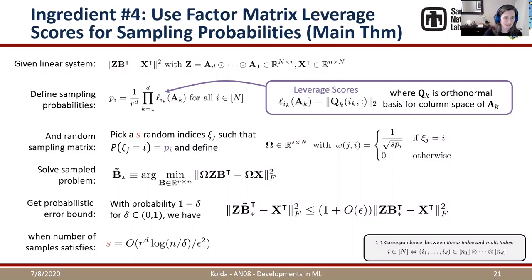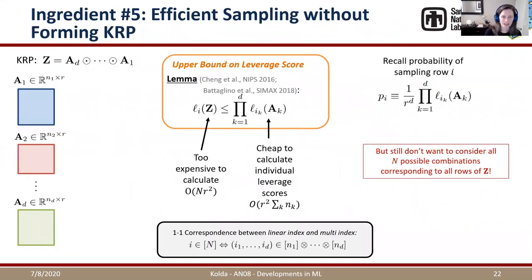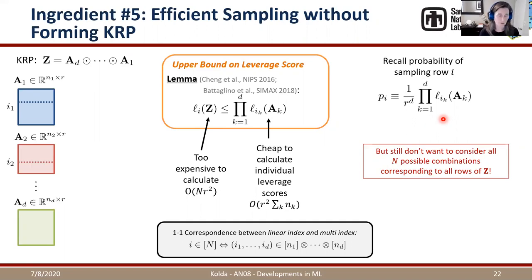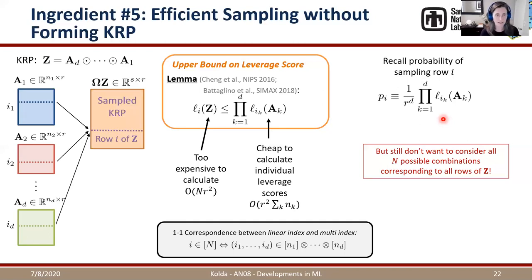Even with this bound, we don't want to compute probabilities for all N rows — that would still be O(N) work. Instead, we sample independently from each factor matrix according to its leverage scores: one row from A1, one from A2, ..., one from A_D. We multiply those sampled rows element-wise to build a row of the sampled Z, without ever explicitly forming Z. This avoids forming the large matrix entirely.